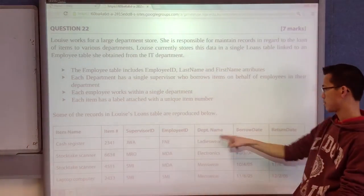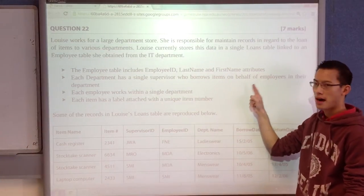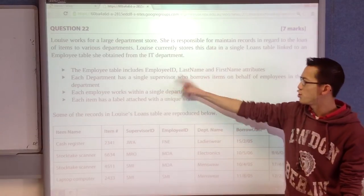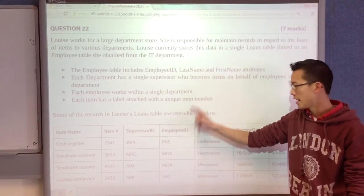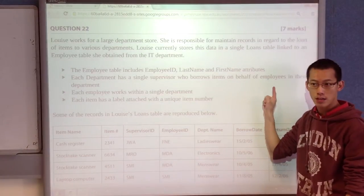And then it starts talking about other kinds of information which appears in this loans table. Each department has a single supervisor who borrows items on behalf of employees. Now, mark that, by the way, it'll become crucial later. The supervisor is the one borrowing the items.